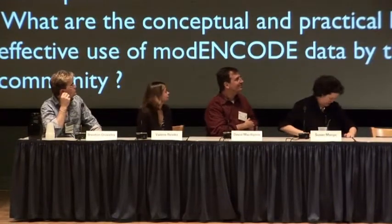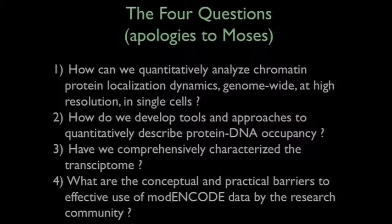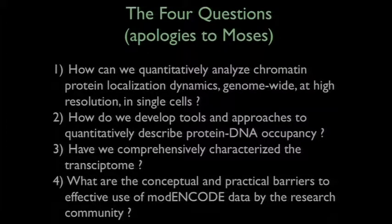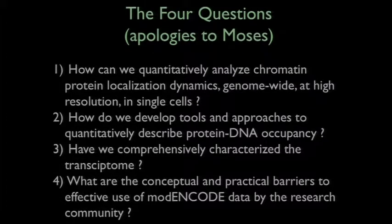The way we're going to organize this is we're going to have four questions with roughly 10 minutes total directed towards each question. Each of us will get up and present the context for the question, then we'll have a discussion. The four questions are: How can we quantitatively analyze chromatin protein localization dynamics, genome-wide at high resolution in single cells? How do we develop tools and approaches to quantitatively describe protein-DNA interactions and occupancy? Have we comprehensively characterized the transcriptome? And what are the conceptual and practical barriers to effective use of modern genomic data by the research community?